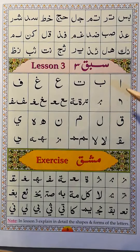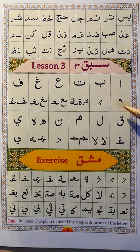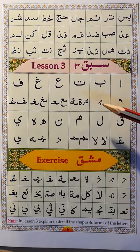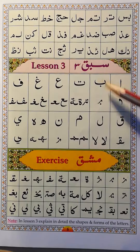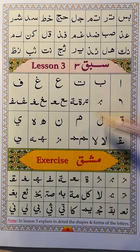So basically for the alif, we'll see the alif comes like this sometimes, on the word. For ba, we'll see only a little shape with the ba here. We'll understand this is ba by the one dot on the bottom.